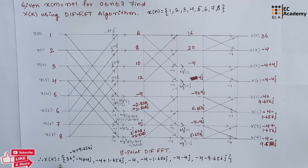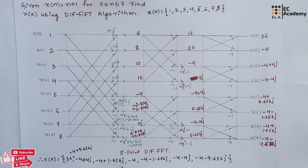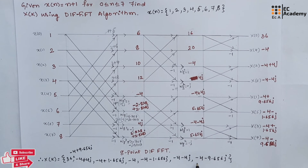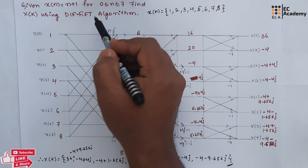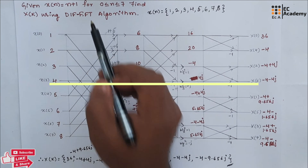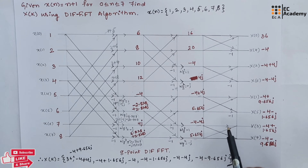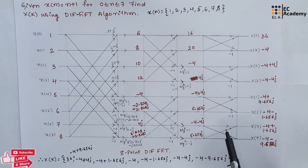Finally, we can write x of k as: 36, minus 4 plus 9.656j, minus 4 plus 4j, minus 4 plus 1.656j, minus 4, minus 4 minus 1.656j, minus 4 minus 4j, minus 4 minus 9.656j. This is the DFT for the given sequence using DIF FFT — this is the 8-point DIF FFT problem. Hope you have understood the topic. Thank you.